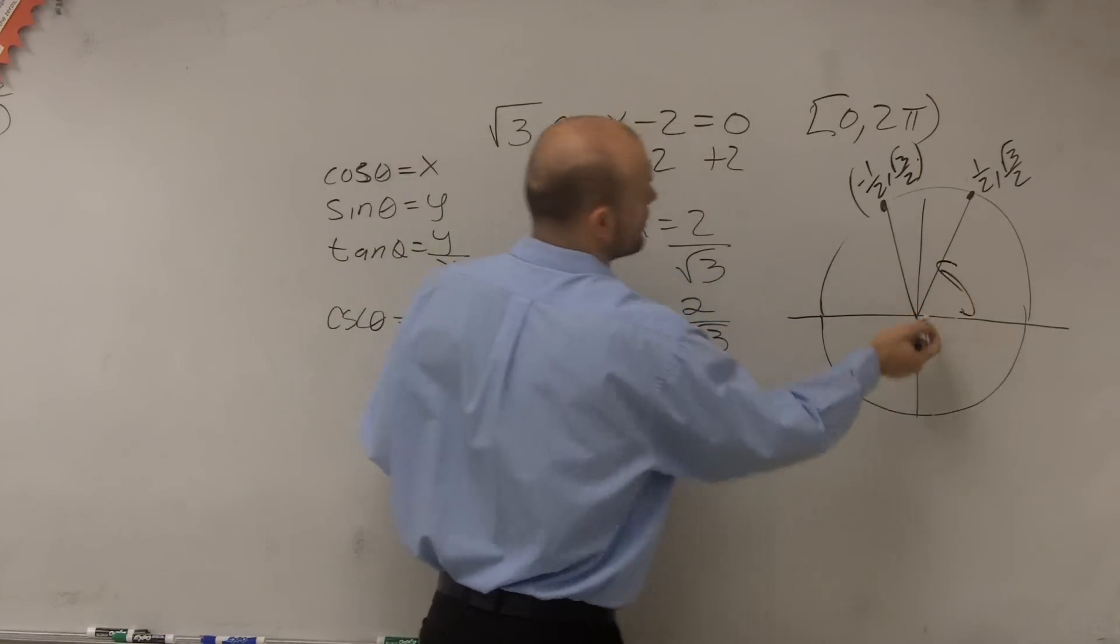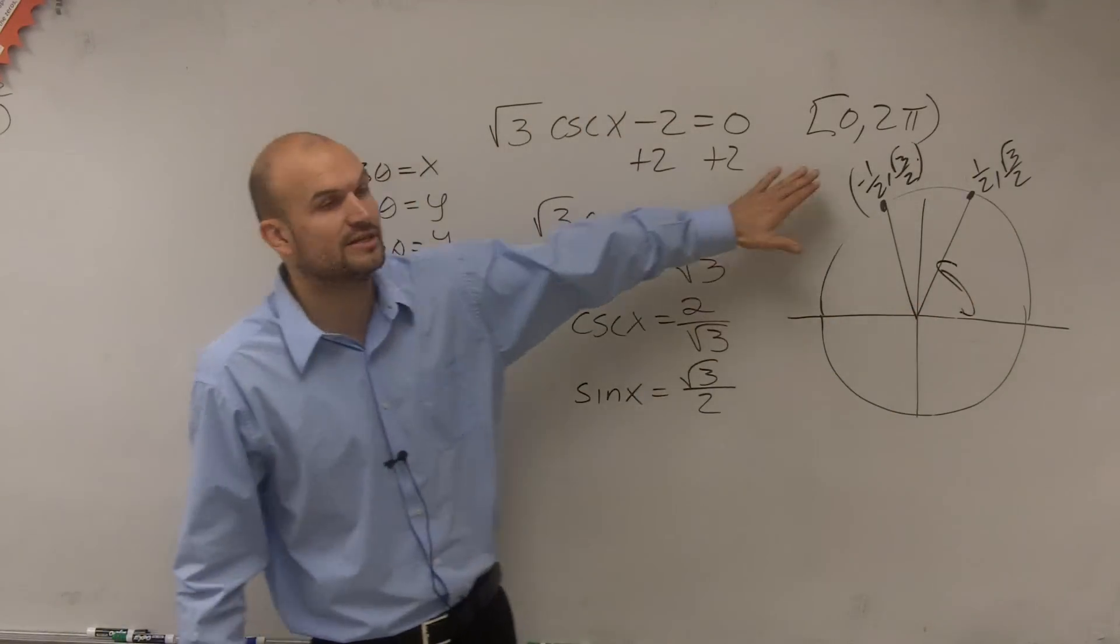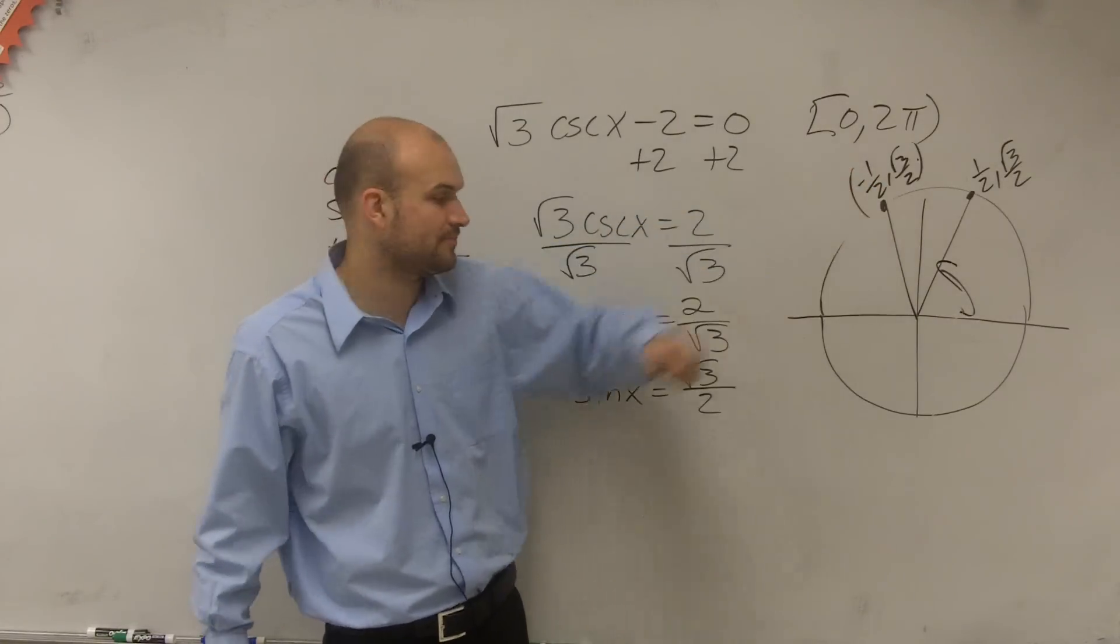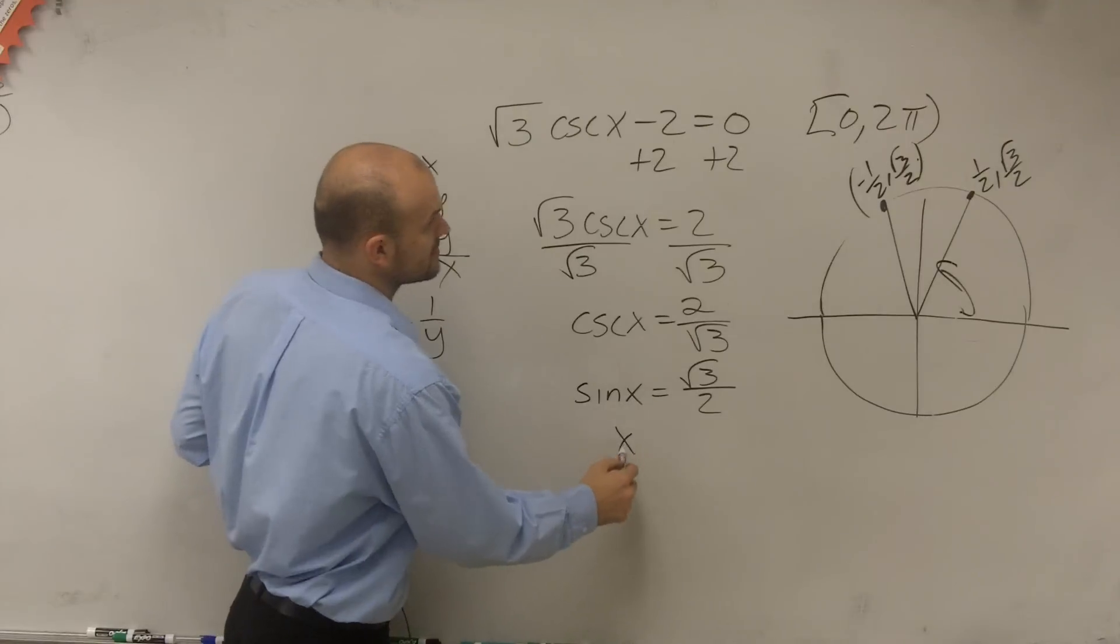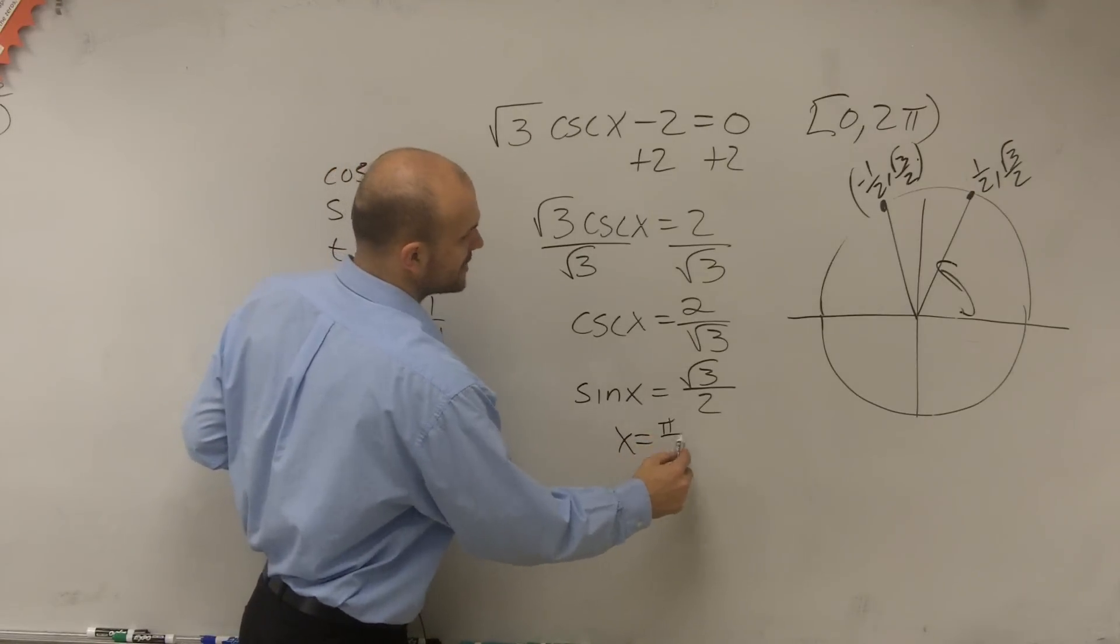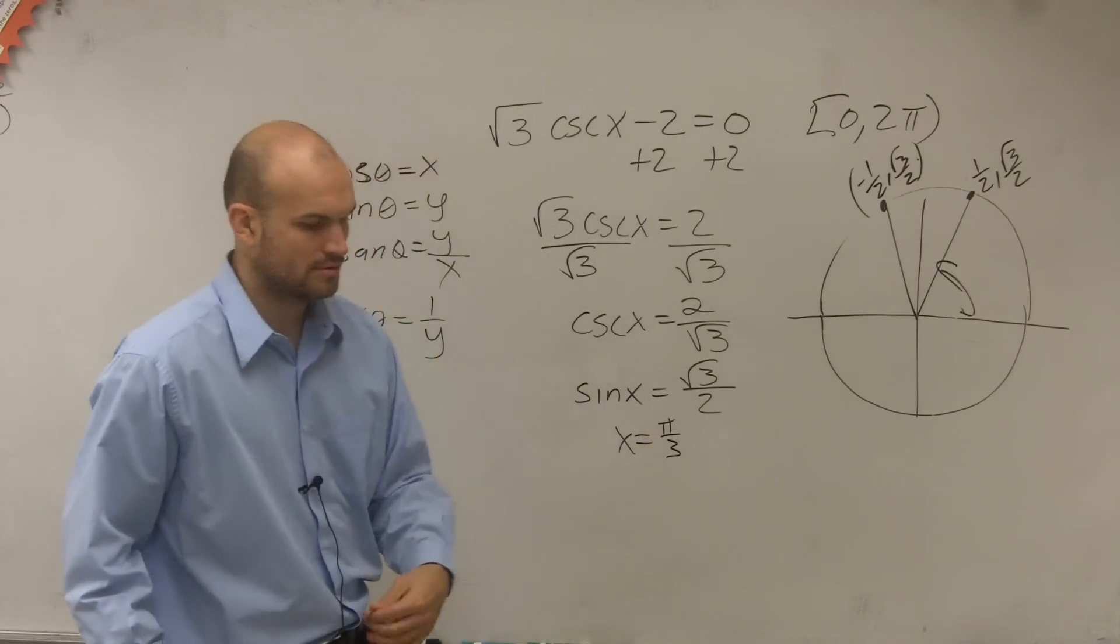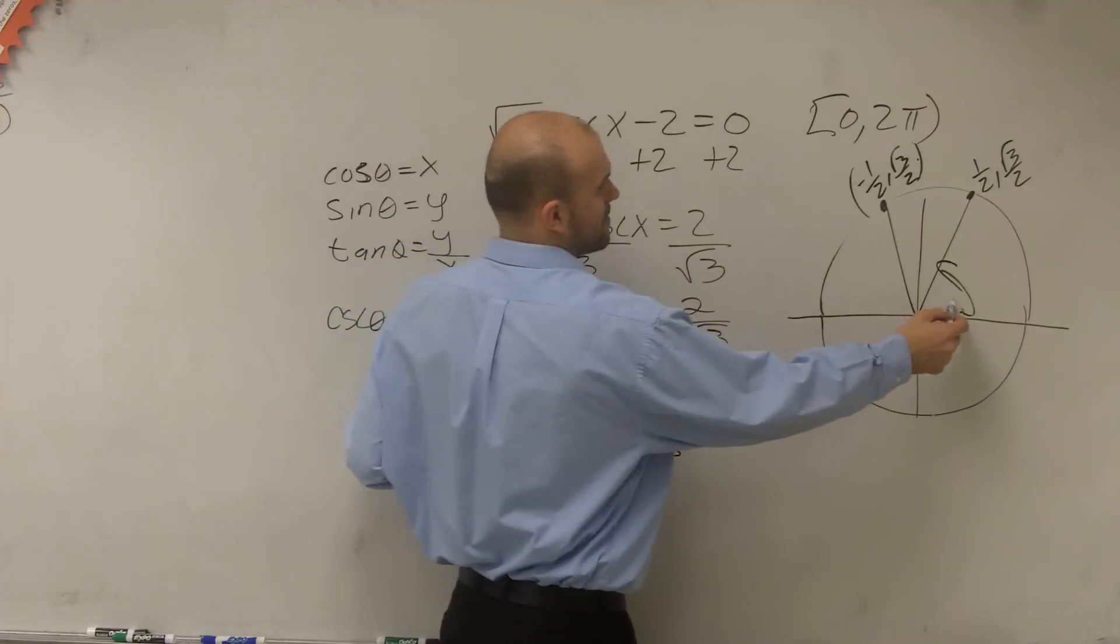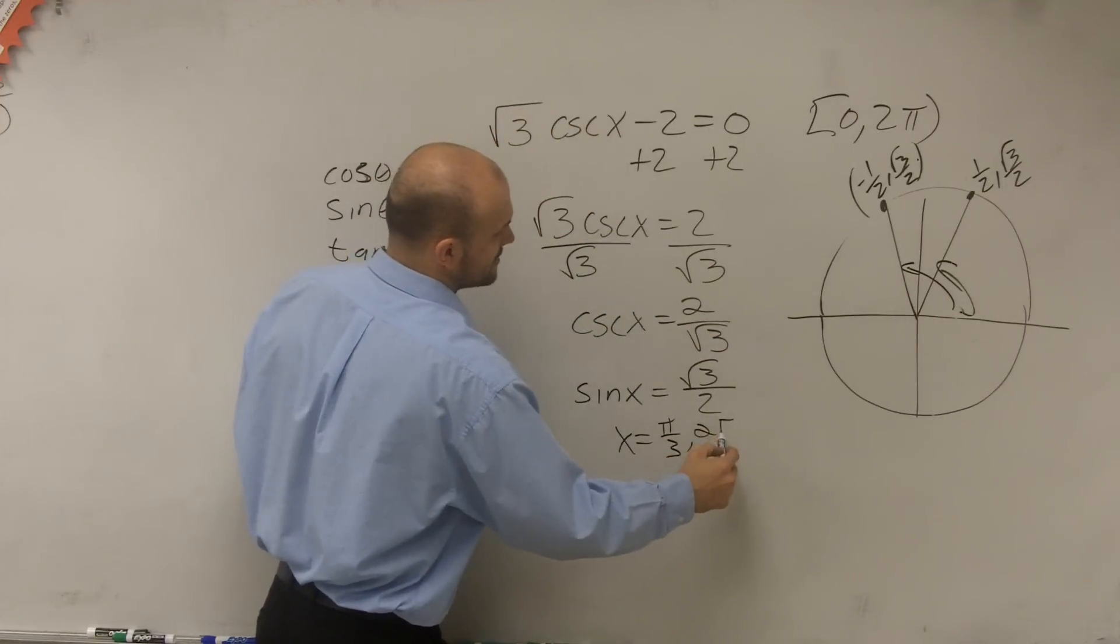Well, our first point, and remember, we're only finding the values within our interval of 0 and 2π. So our first value is x equals π thirds. And the next point is going to be 2π thirds.